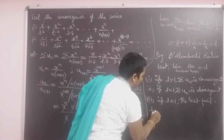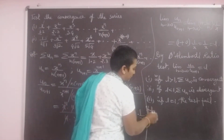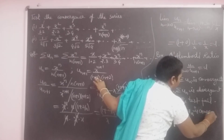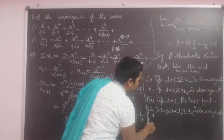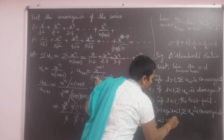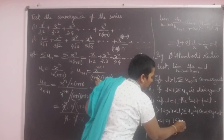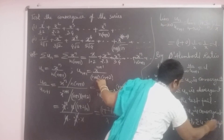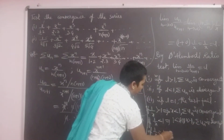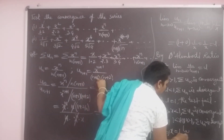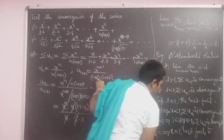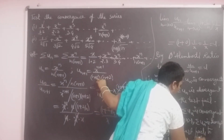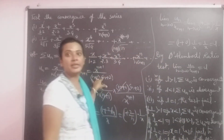Here L = 1/x. By D'Alembert's ratio test: if 1/x > 1, meaning x < 1, then Σuₙ is convergent. If 1/x < 1, meaning x > 1, then Σuₙ is divergent. If 1/x = 1, i.e., x = 1, the test fails to decide the nature of the series. This completes the first problem solution.